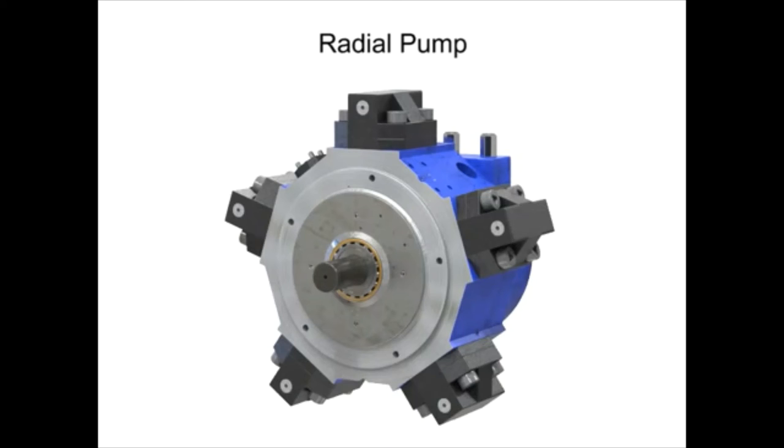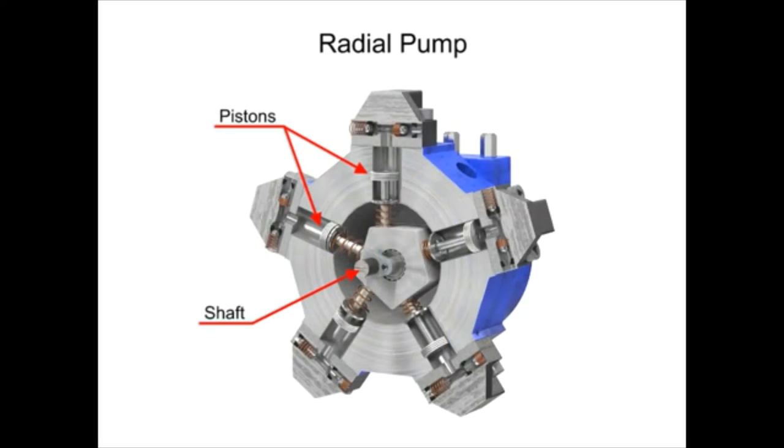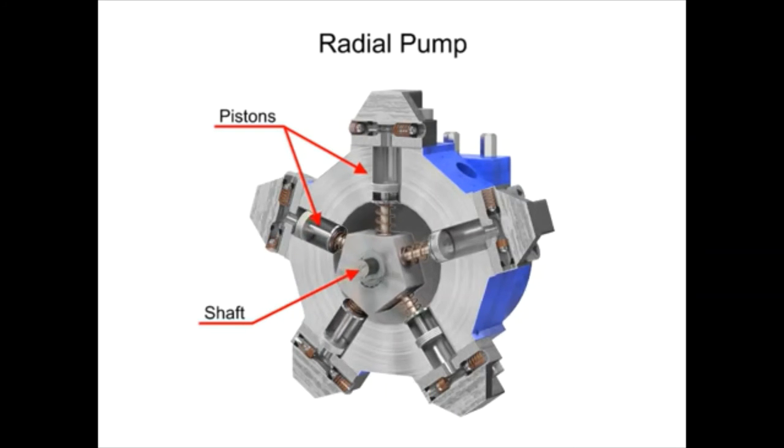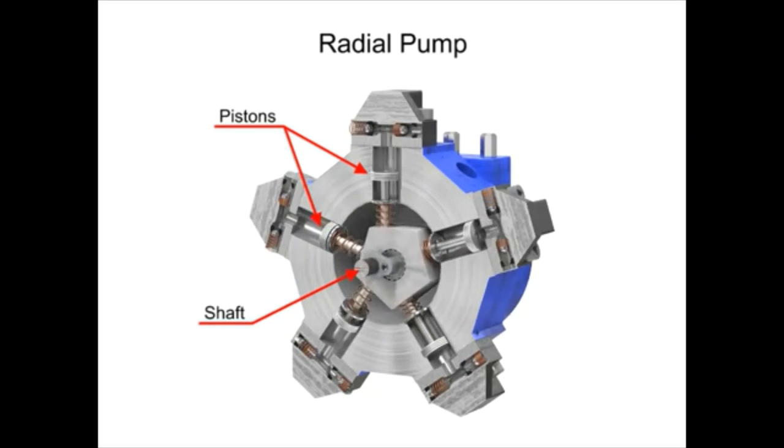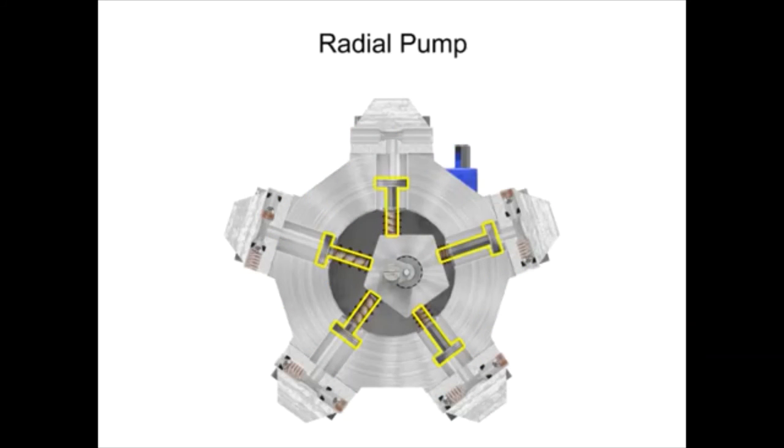Radial pumps are designed so the pistons stroke in a direction at right angles to the shaft. The pistons are arranged like wheel spokes around a cylinder block with an eccentric central cam mounted on a drive shaft.